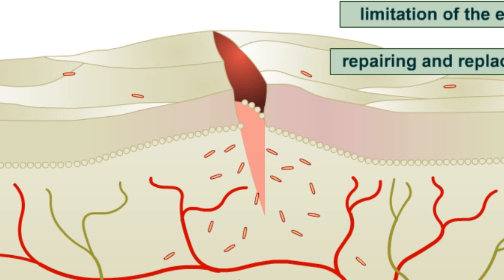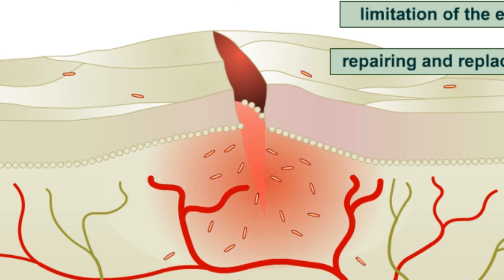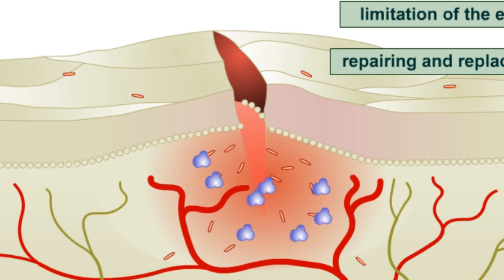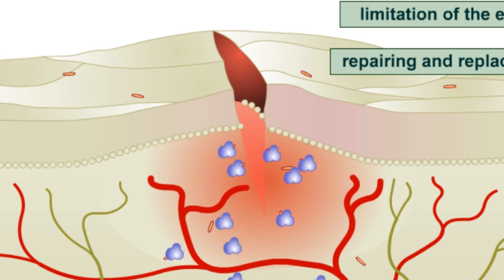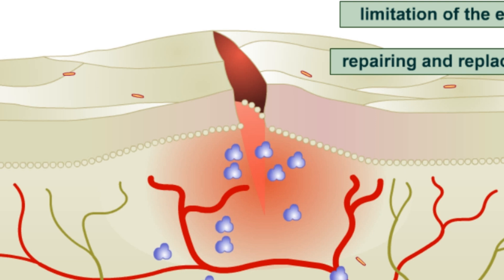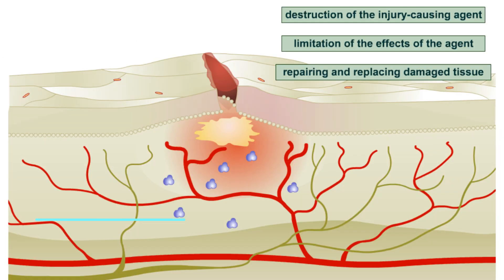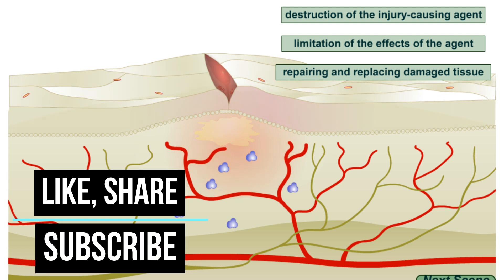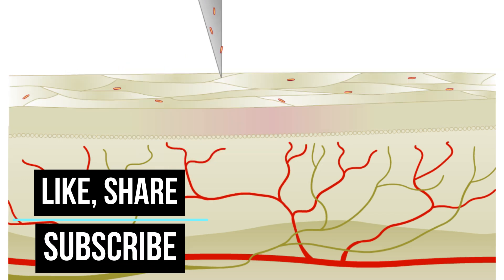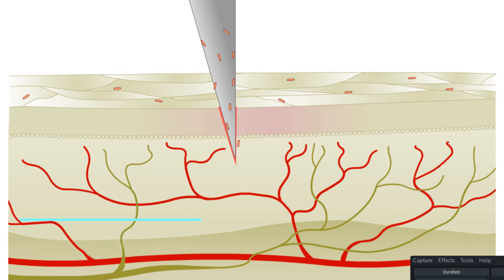The third function is repairing and replacing damaged tissue. Inflammation leads to repair and replacement of the damaged tissue when possible. Different tissues have different capacities to regenerate themselves. While the outer layer of the skin is able to completely repair a small cut leaving no scar, cardiac muscle tissue does not regenerate at all.